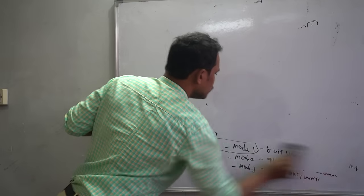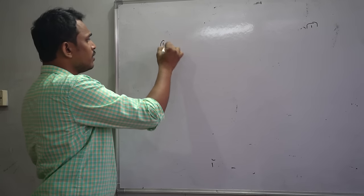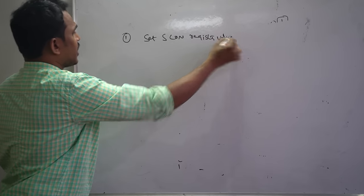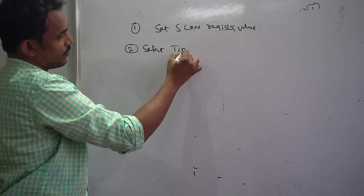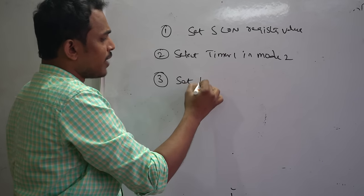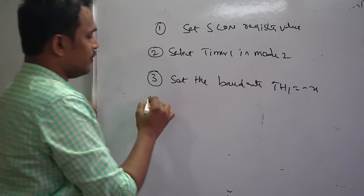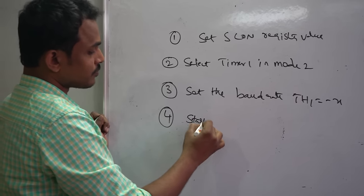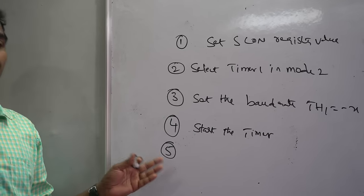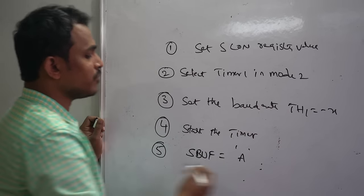To establish serial communication, the following steps must be followed: Step 1 — set the SCON register value (50H). Step 2 — select Timer 1 in Mode 2. Step 3 — set the baud rate using the formula TH1 = -X. Step 4 — start the timer. Step 5 — load the value you want to transmit into the SBUF register.